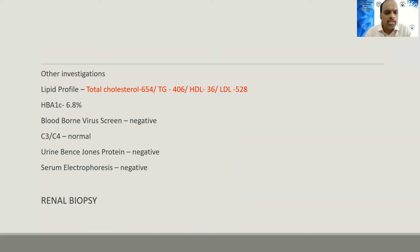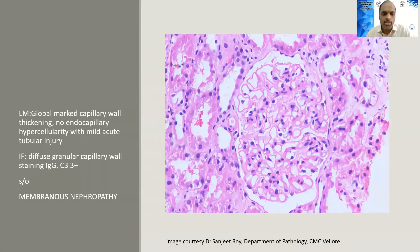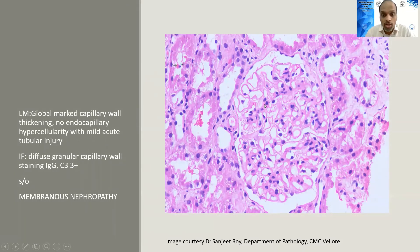Further investigations showed well-controlled diabetes, negative blood-borne virus screen, normal complement levels, and no monoclonal proteins detected. Renal biopsy showed marked global capillary wall thickening — the thickness of the glomerular capillary wall was almost similar to the tubular basement membrane. Immunofluorescence showed diffuse granular capillary wall staining of IgG and C3. These features are consistent with membranous nephropathy.